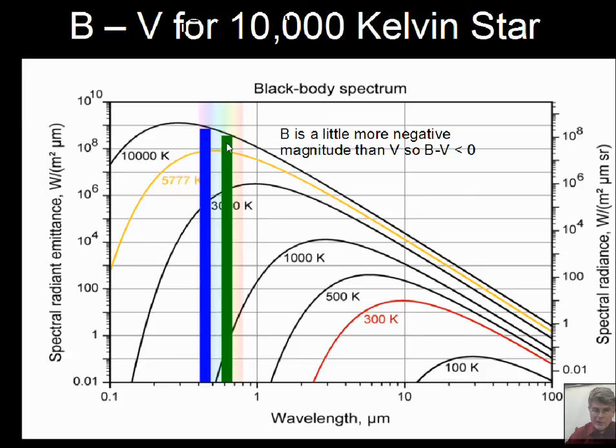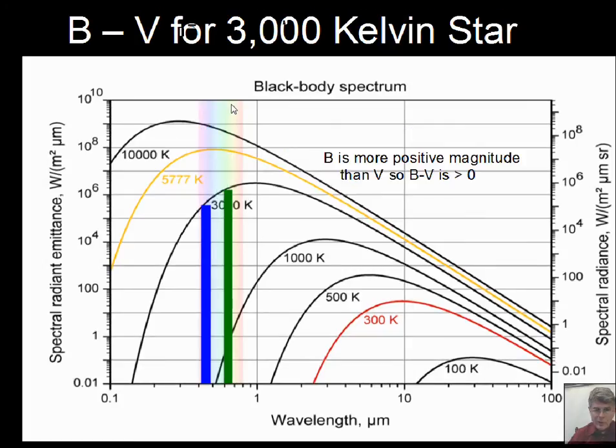So I hope you're getting the sense of this. Again, the dimmer star has a more positive value for the magnitude, the brighter object has a more negative magnitude. So when we do this calculation, we get a negative number. But that's a 10,000 Kelvin object. B minus V is a negative number.